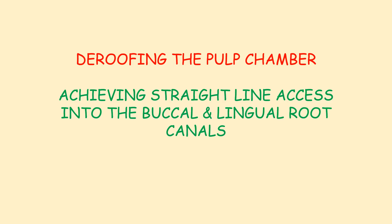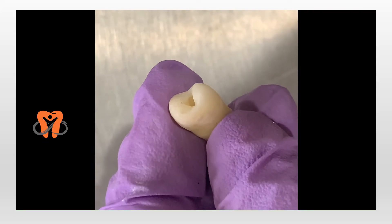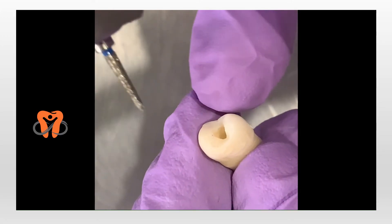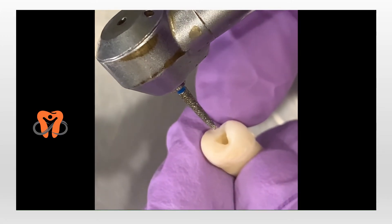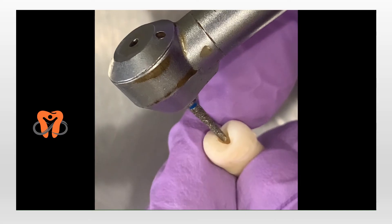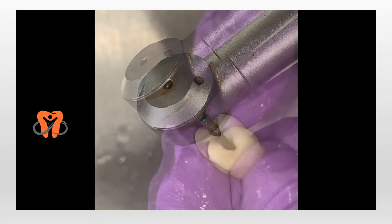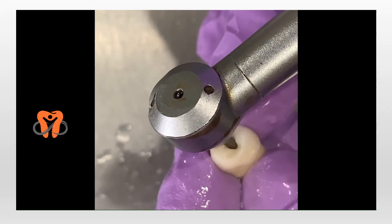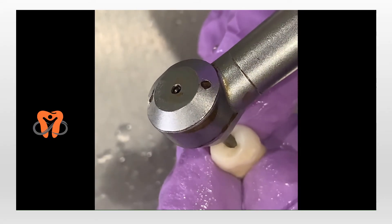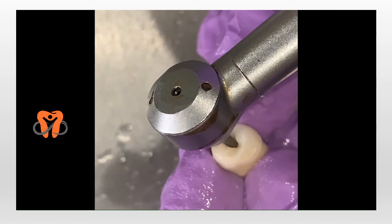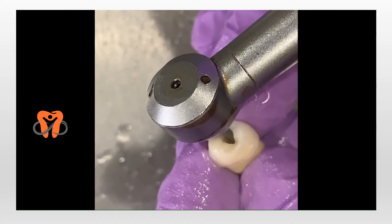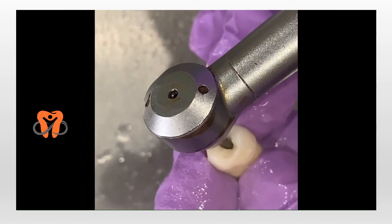After entering the chamber, the next important step is de-roofing the pulp chamber and then achieving a straight line access into the buccal and the lingual root canals. To de-roof the pulp chamber, I use a tapered cylindrical burr. The most important thing here is that while I cut, I maintain the depth of the burr. If I do not do that, I will cut deeper and cause perforation. I move the burr in the buccal and lingual direction alongside the walls of the pulp chamber so that I'm able to de-roof it completely.